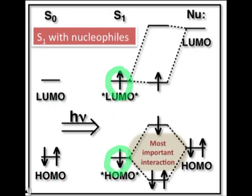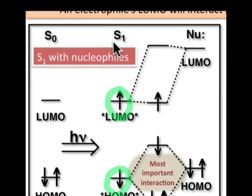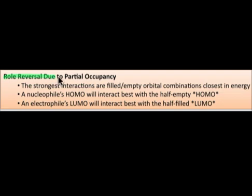We normally think of the HOMO as the nucleophile and the LUMO as the electrophile. But because the HOMO is partially empty and the LUMO is partially filled, there's a role reversal in the behavior of these molecular orbitals. The main point we need to remember is that the strongest interactions are going to take place between the filled-empty orbital combinations that are closest in energy.